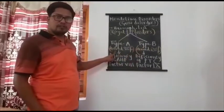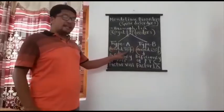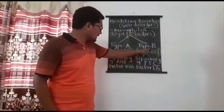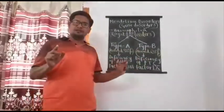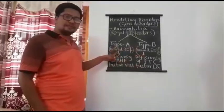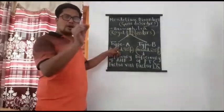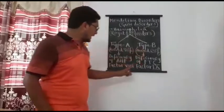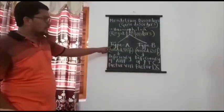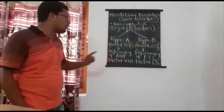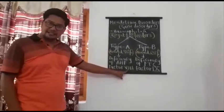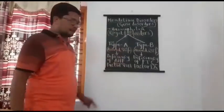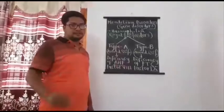Hemophilia type A is the most common form — more than 80 percent of hemophilic patients worldwide have type A. Hemophilia type B is the rare form. Hemophilia type A is caused due to the deficiency of blood clotting factor number eight, whose name is AHF — Anti-Hemophilic Factor.